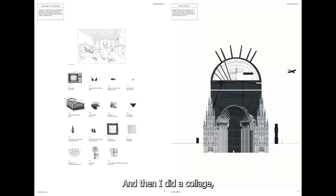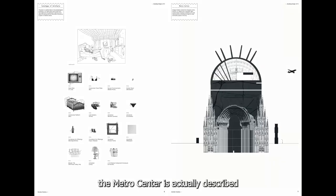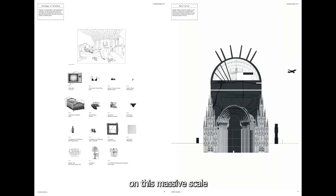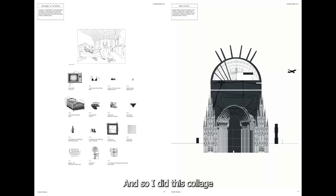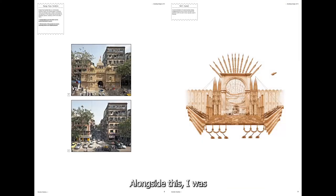I also did a collage on the right for the Metro Centre — one of the key elements in JG Ballard's book. The Metro Centre is essentially described as this magnificent shopping centre on a massive scale, bigger than Westfield or anything like that. I did this collage to understand the scale, but also the detail and magnificence of the architecture described in the book. Alongside this, I was thinking about the purpose and programme of the building. I was leaning heavily towards something like a festival and came across Durga Puja Pandals — pieces of temporary architecture erected during a specific festival in India.